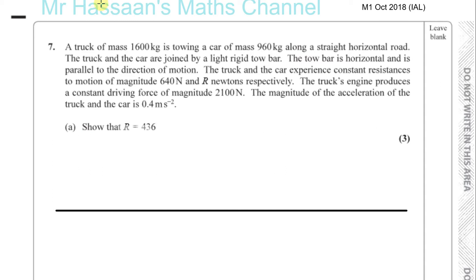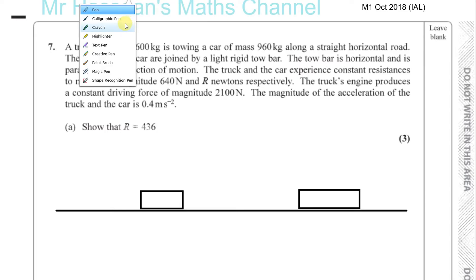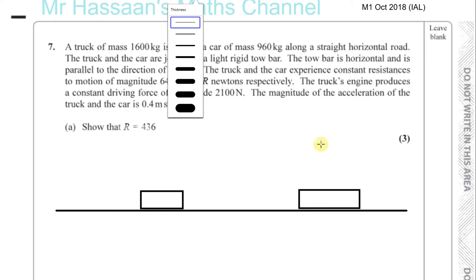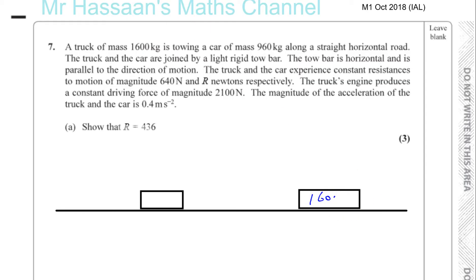Let's say that this is our straight horizontal road. You've got a truck — just draw it as a box — a truck of mass 1,600 kilograms. And you've got a car of 960 kilograms. They're connected by a light, rigid tow bar.